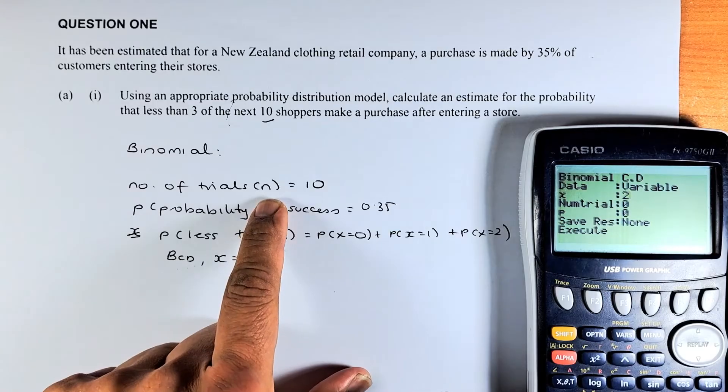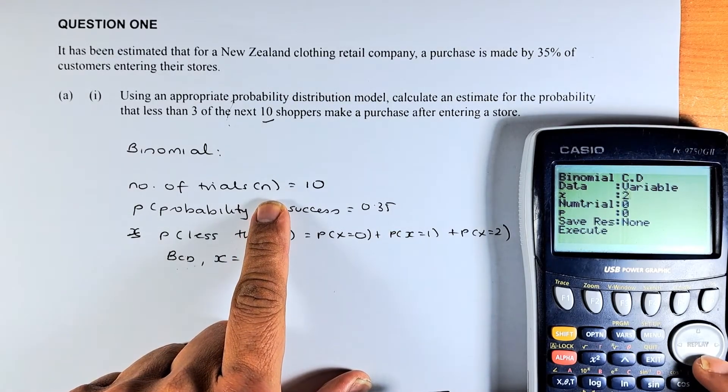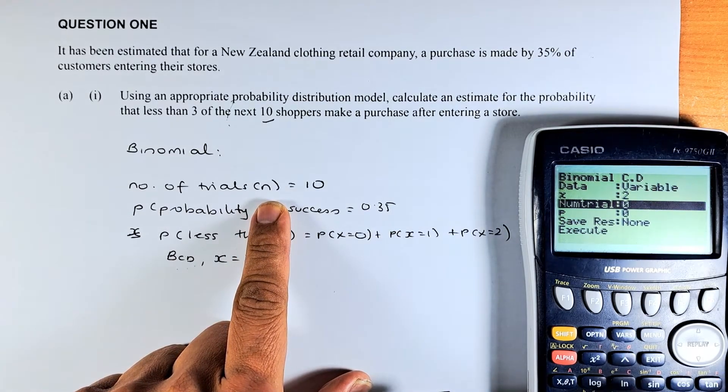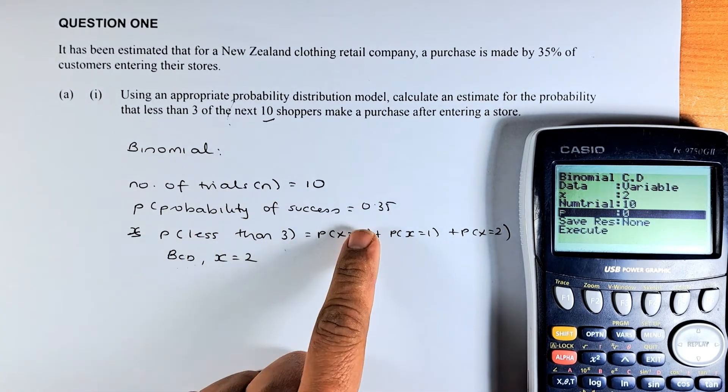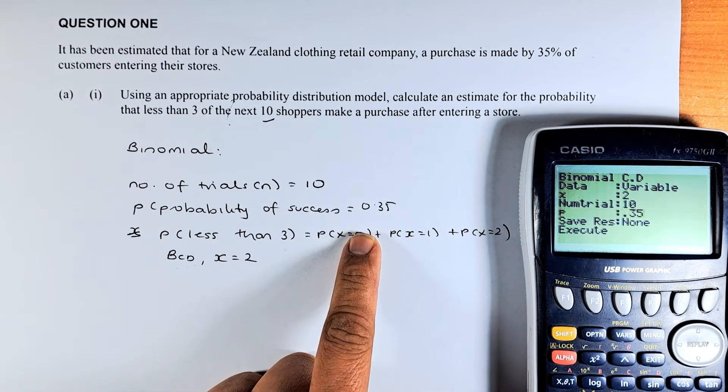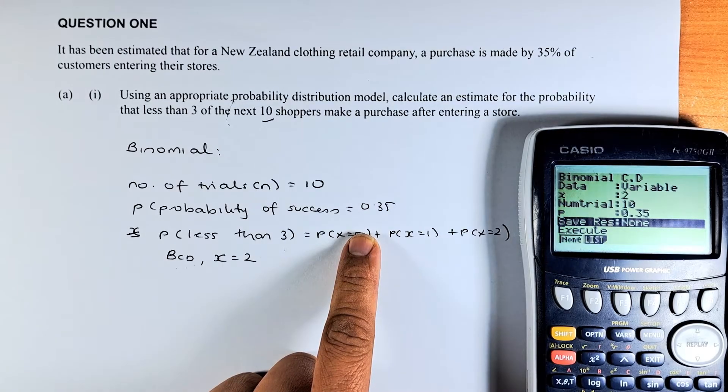Number of trial is N, which is 10. So we are going to put execute. And number of trial is going to be 10, execute it. P is the probability of success, 0.35, execute it.